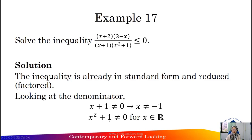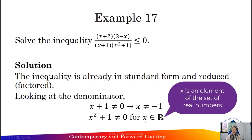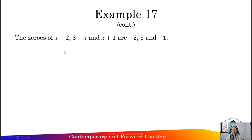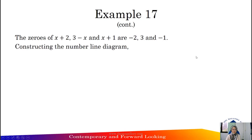So x cannot be negative 1. And for x² + 1, it cannot equal 0 for all real numbers. So the zeros for (x + 2), (3 - x), and (x + 1) are negative 2, 3, and negative 1.